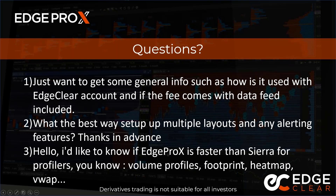Someone asked if EdgeProX is faster than Sierra Chart for volume profiles, footprint, heat map, and VWAP. This is a difficult question to answer because there are a lot of different factors that go into the speed of a platform — it can be the data feed you use, your internet, your machine, and how much information the platform is pulling in at one time. So I wouldn't be able to accurately answer which platform is faster. On a high-operating machine with low latency, you'd be pulling in the same data and theoretically both platforms would be at the same speed.